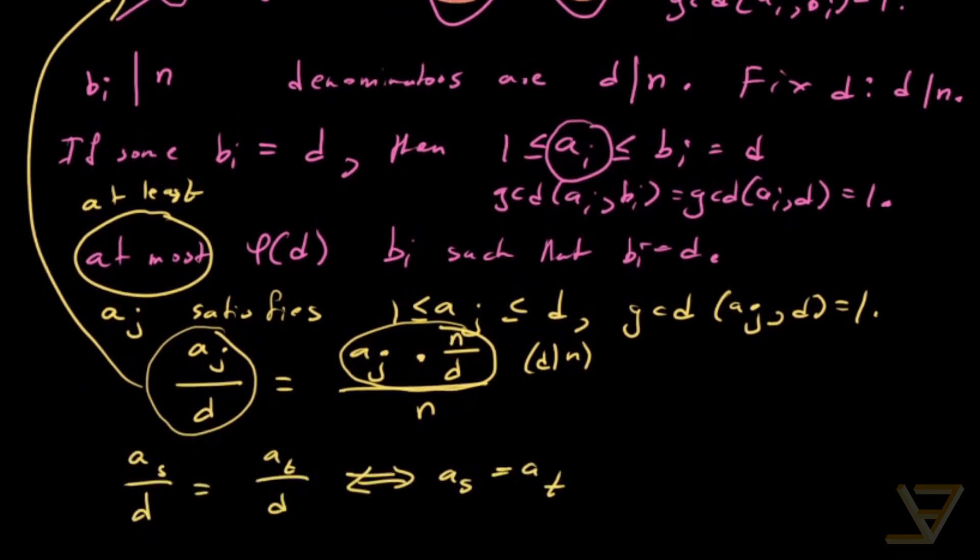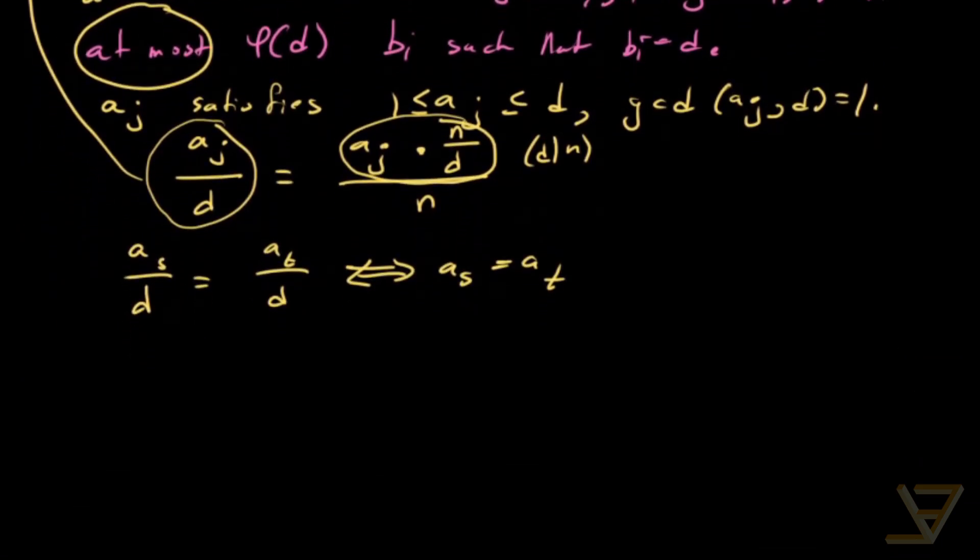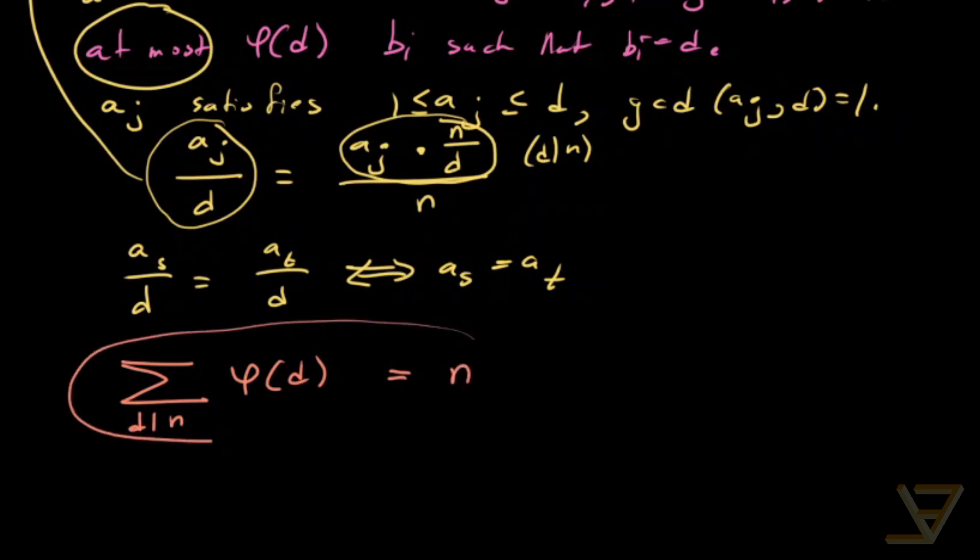And we can iterate over all the possible d to get that the sum, the number of elements of the tuple is equal to phi of d where d divides n. But we know that the number of elements of the tuple is also equal to n. So that allows us to compute the summation function of phi using double counting.